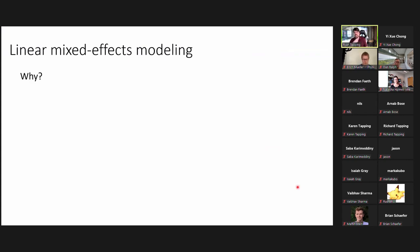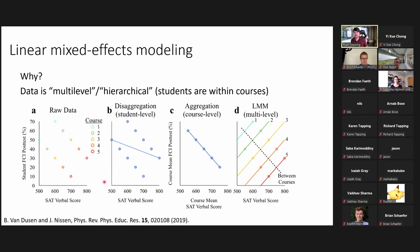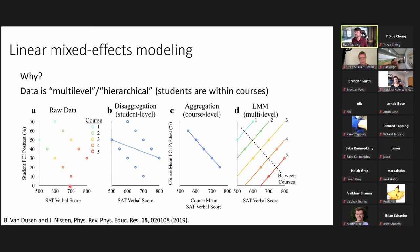To analyze this data, I'm using linear mixed effects modeling. The data is multi-level or hierarchical. A common approach is disaggregation — taking all students and plotting the relationship between, say, SAT verbal score and FCI post-test score — but this can show a negative correlation that is very unusual. Aggregation at the course level also shows a strong negative correlation between courses. Linear mixed effects models are designed to handle this multilevel data, because within each course there's a strong positive correlation, while between courses there's a strong negative correlation.